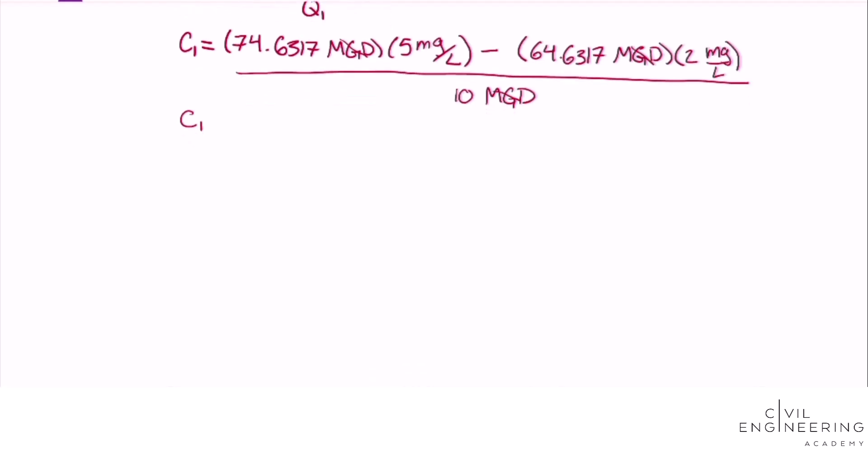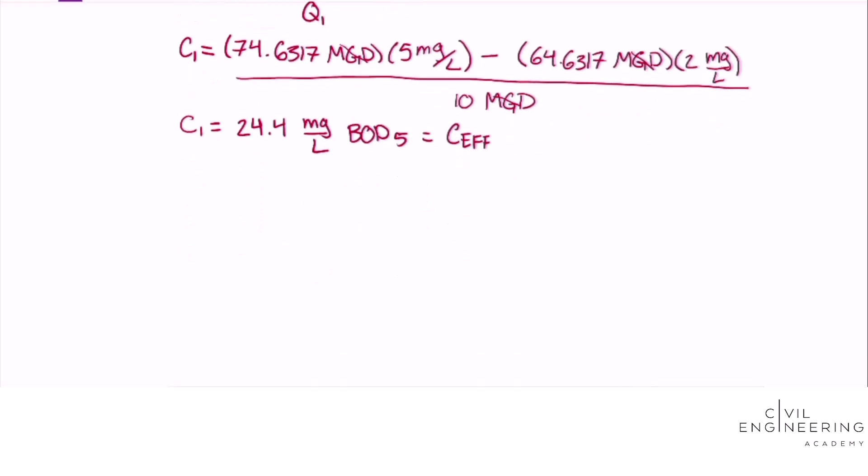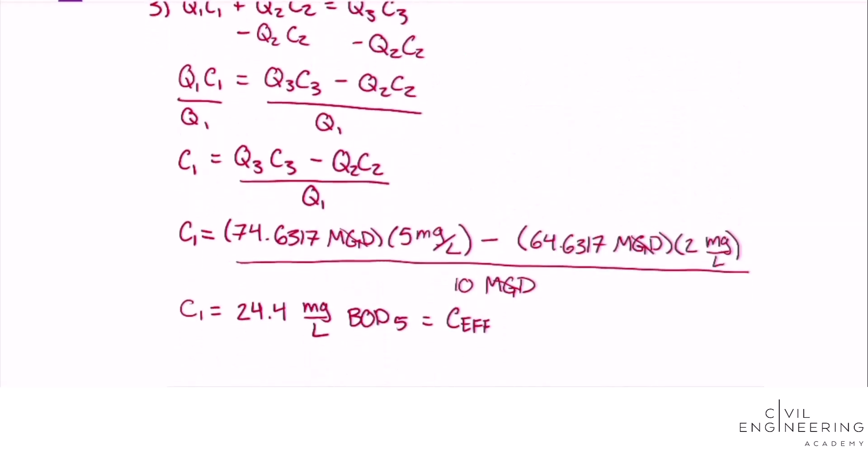We're left with an answer of 24.4 mg per liter BOD5 as our wastewater treatment plant effluent value. But we're not done yet because we need to find the percent removal of BOD5.